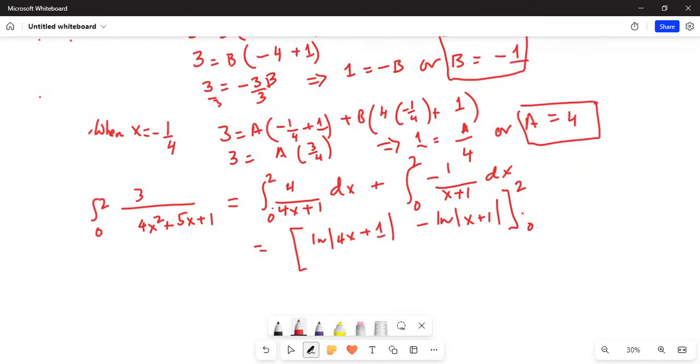If I plug in the value of x equal to 2, I get the upper limit, ln of 4 times 2 is 8, 8 plus 1 is 9. Minus ln of 4, minus ln, I plug in 2, so ln of 2 plus 1 is 3, and then you have minus minus plus ln of 1.